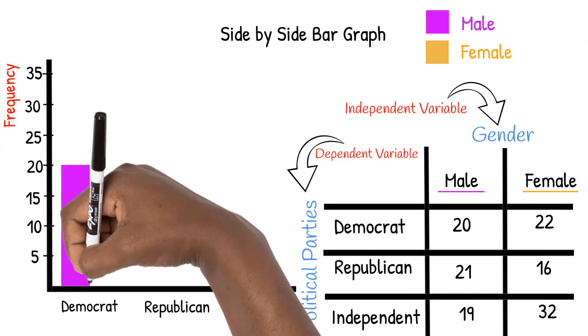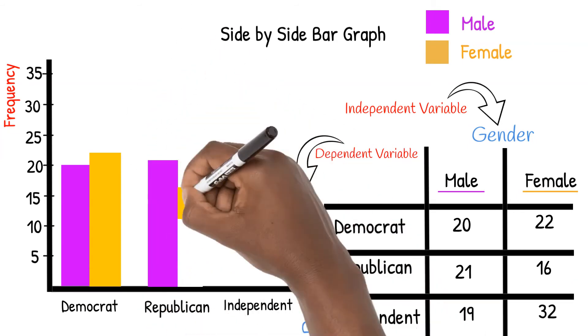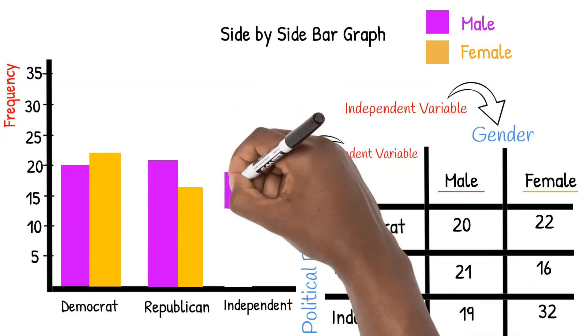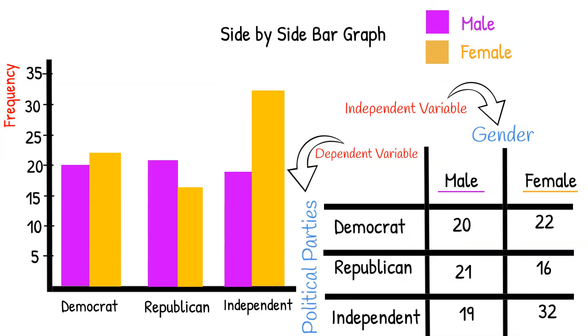There are 20 male Democrats and 22 female Democrats, 21 male Republicans and 16 female Republicans. And finally, there are 19 male independents and 32 female independents.